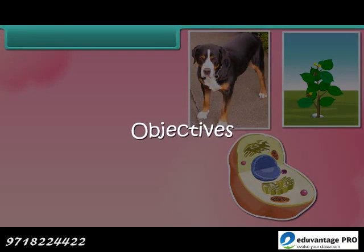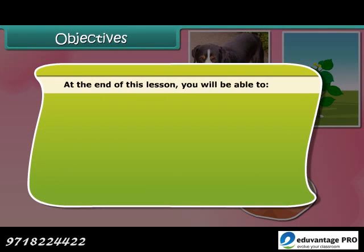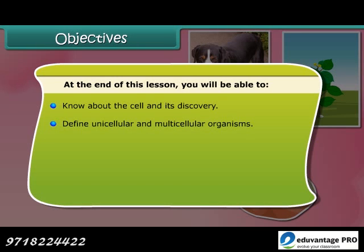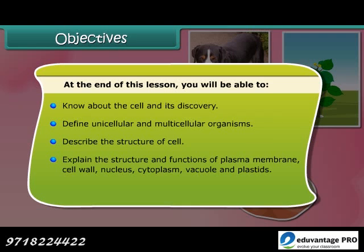Objectives: At the end of this lesson you'll be able to know about the cell and its discovery, define unicellular and multicellular organisms, describe the structure of cell, explain the structure and functions of cell membrane, cell wall, cytoplasm, nucleus, vacuole and plastids, and differentiate between the plant and animal cell.